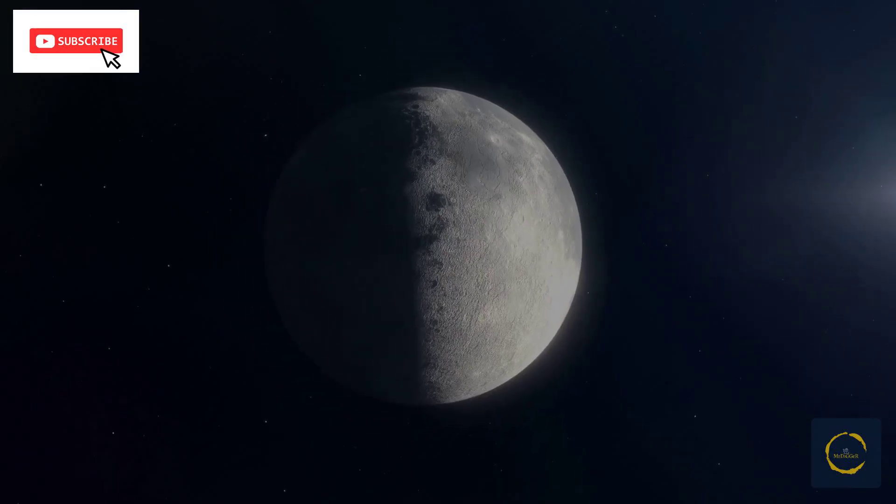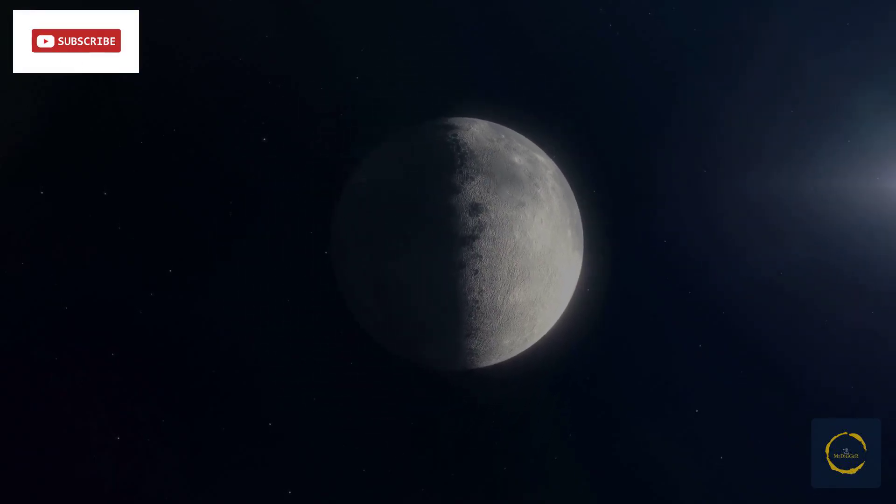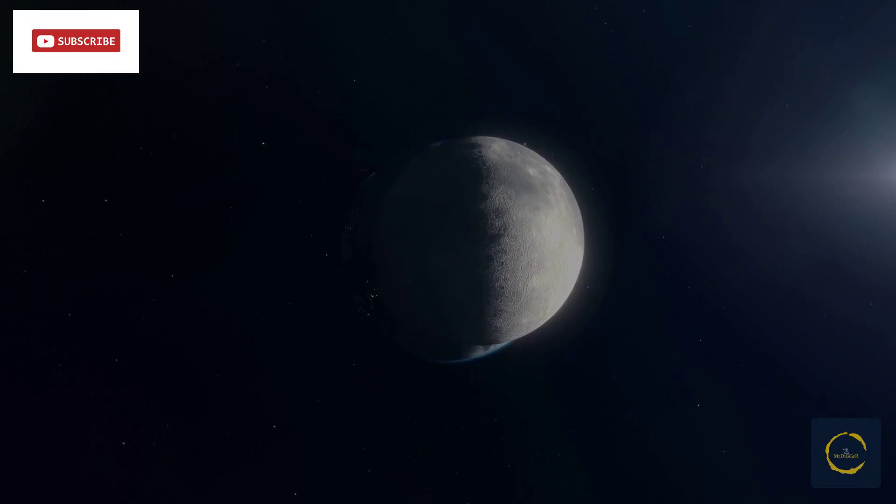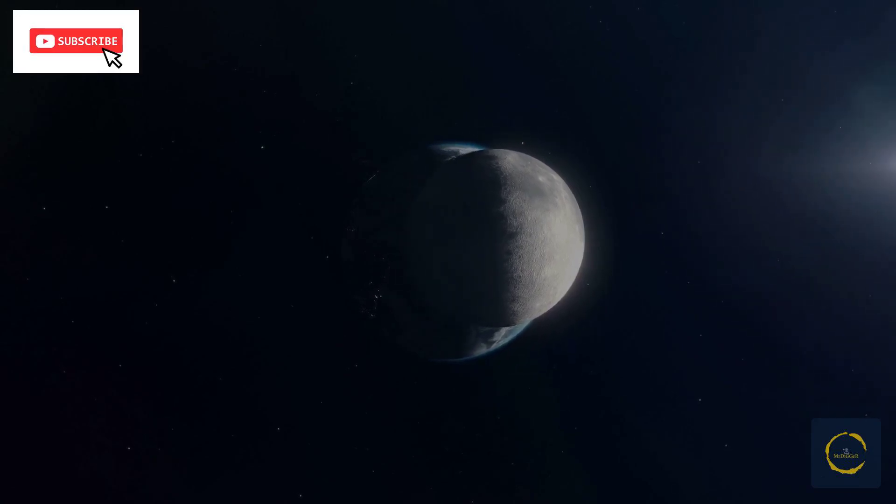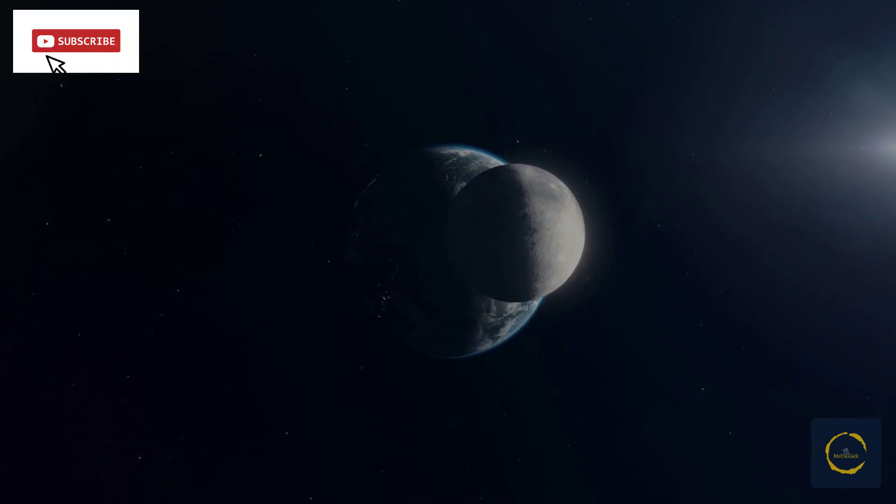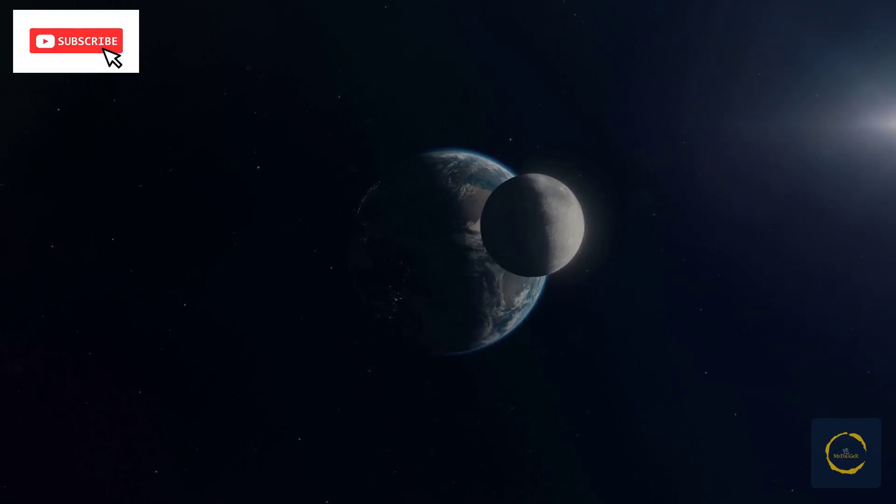As the moon orbits Earth, its distance from our planet varies, and during the 2017 total solar eclipse, the moon was a little bit farther away from Earth than it will be during the upcoming total solar eclipse, causing the path of that eclipse to be a little skinnier.